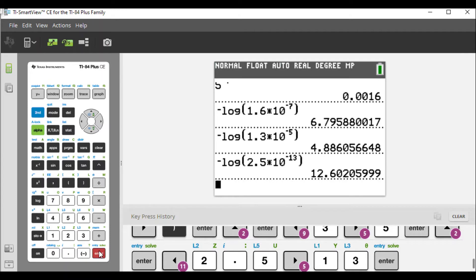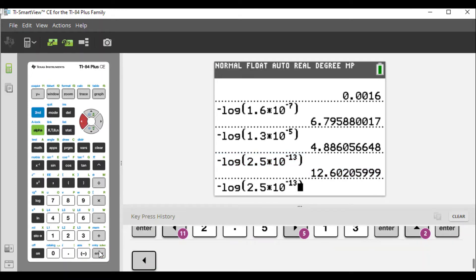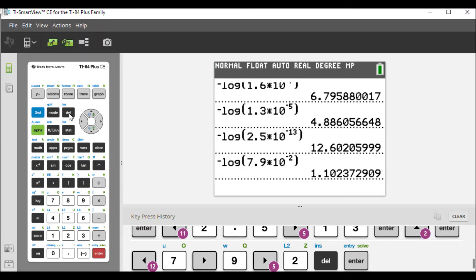We will again copy this and we're going to replace this with 7.9, so 7.9, and this is times 10 to the negative 2, so we're going to plug in a 2 here and delete the 3. And we hit enter, we get 1.1.